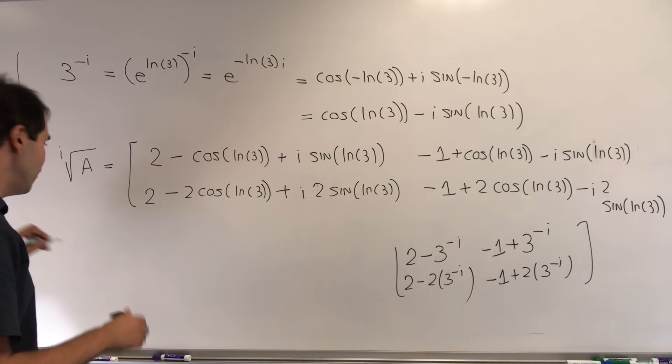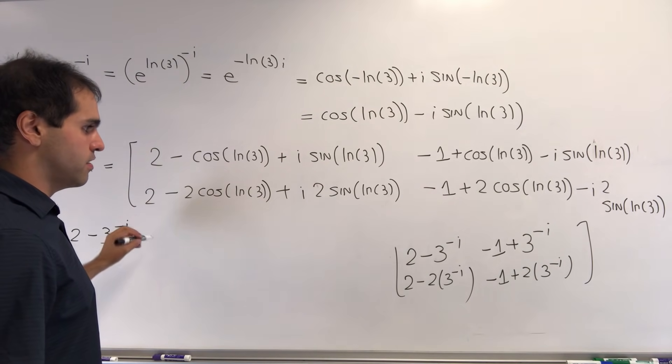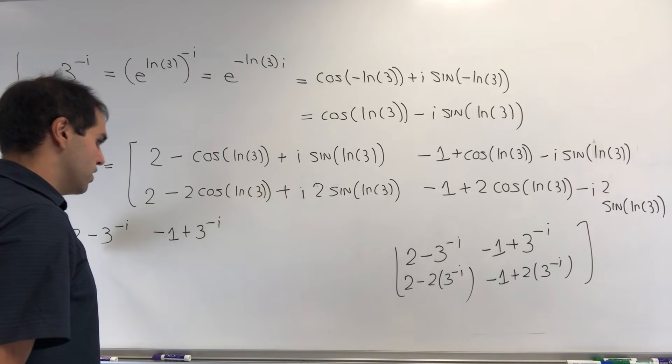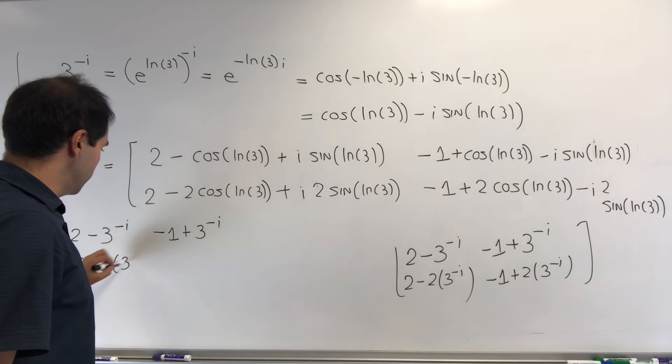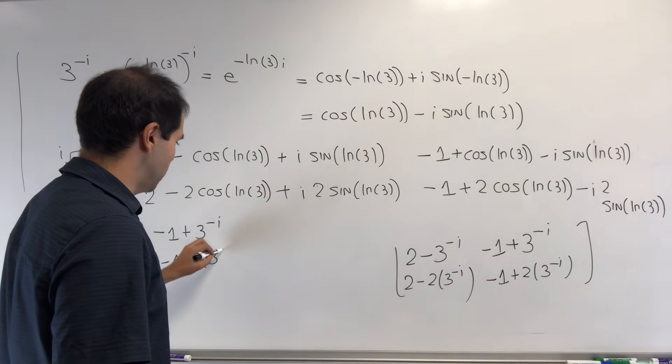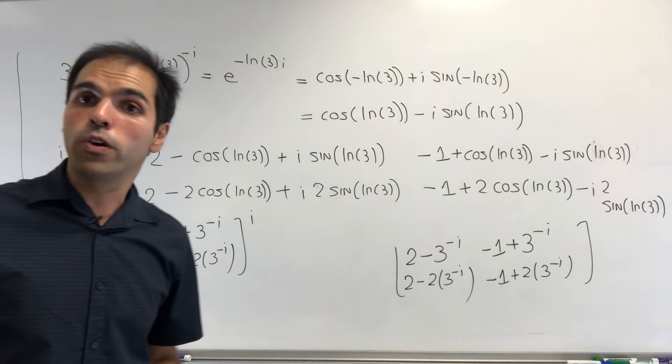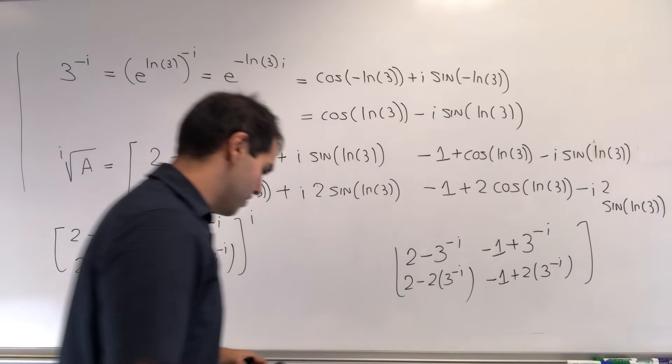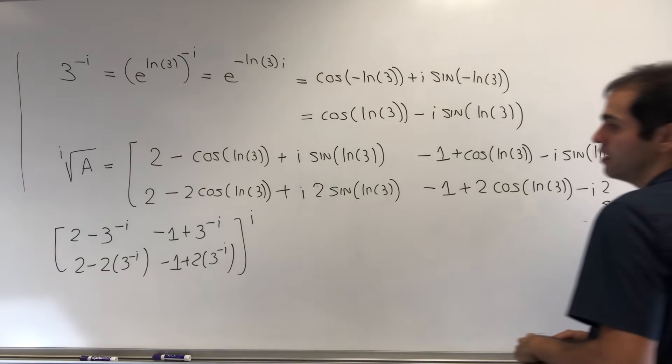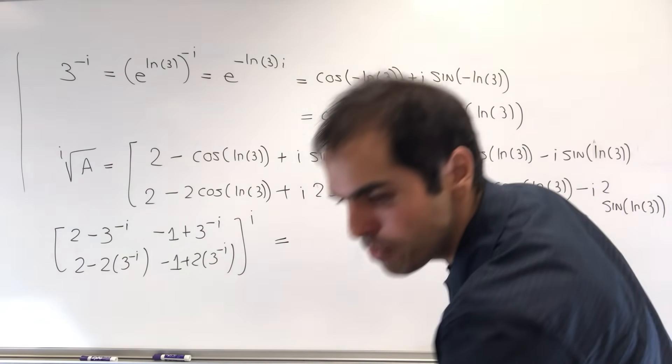We want to show that if we take this thing, this matrix [2 - 3^(-i), -1 + 3^(-i); 2 - 2·3^(-i), -1 + 2·3^(-i)], we want to show that if we take this to the i-th power, then we get our matrix back. Because again, the i-th power of the i-th root should be the original thing.